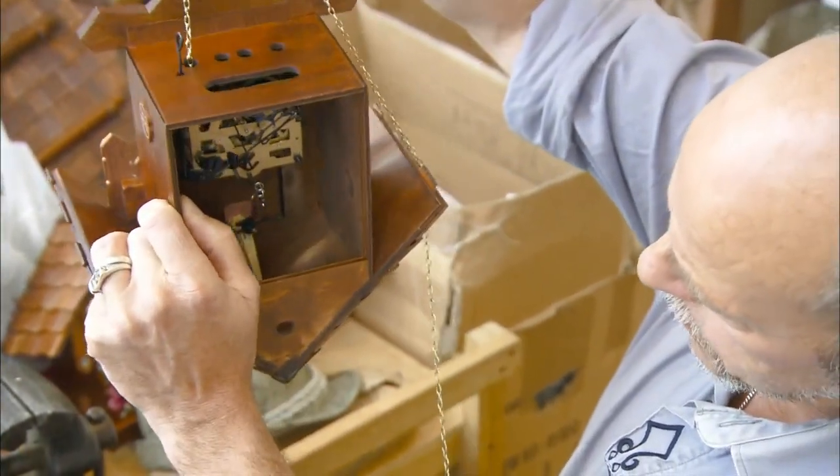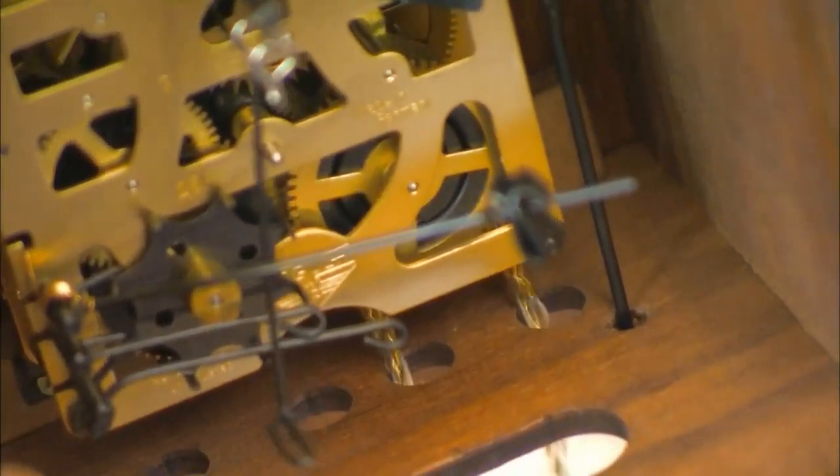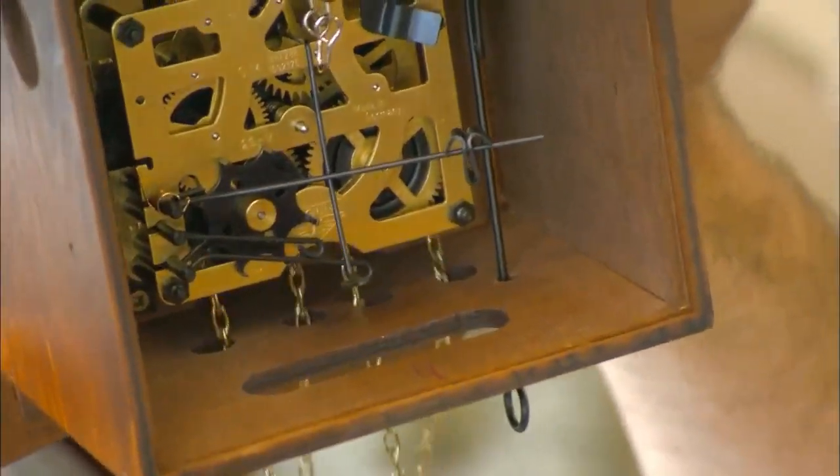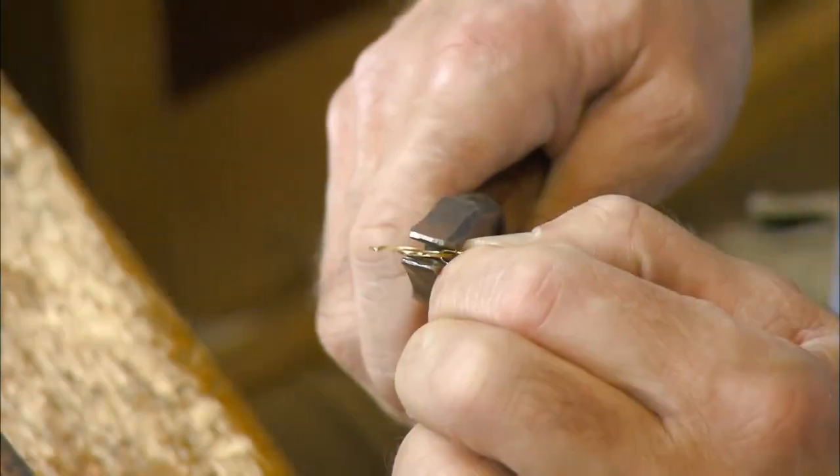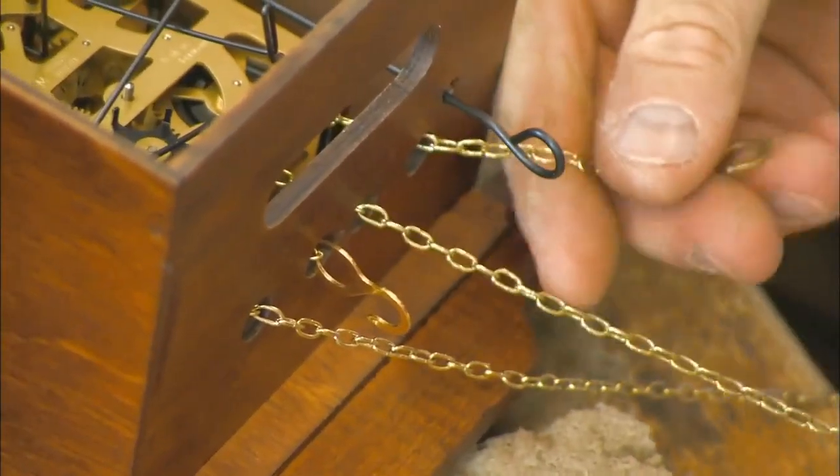Each chain goes into the case through a hole in the bottom, then onto a wheel in the movement, then back out through another hole in the bottom of the case. S-hooks go onto the ends. These will hold cast iron weights that pull the chain.